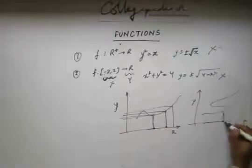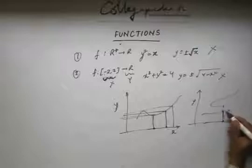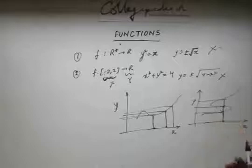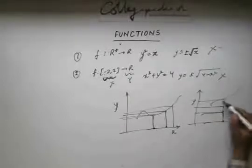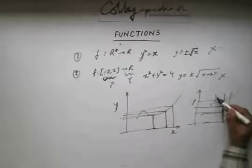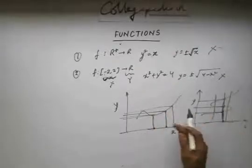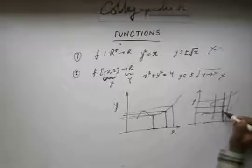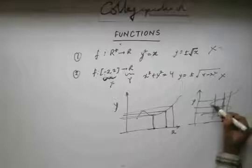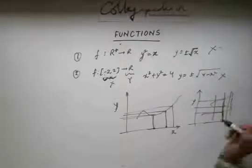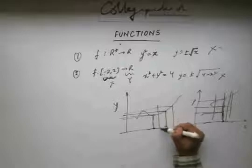But here you see for a given value of x I have two — or rather three — values of y. So this is not a function. To quickly find whether it's a function or not, just draw a straight line parallel to the y-axis. If it intersects the graph at more than one point, then it's not a function. Here it intersects at three points, so this is not a function. But here it intersects at a single point, so this is a function.